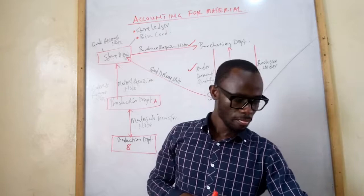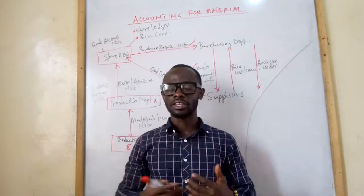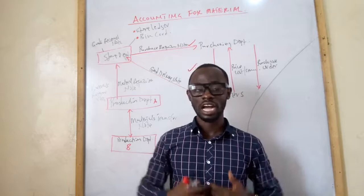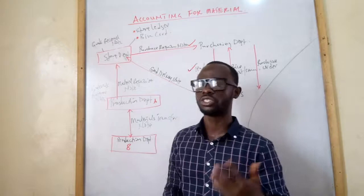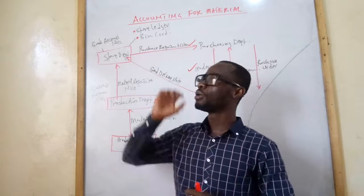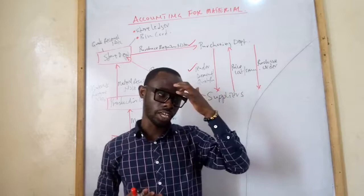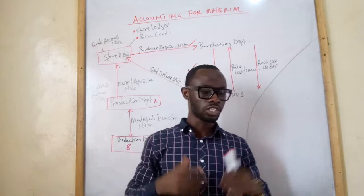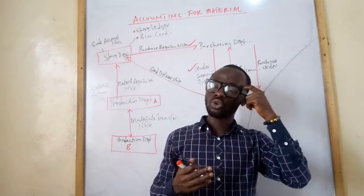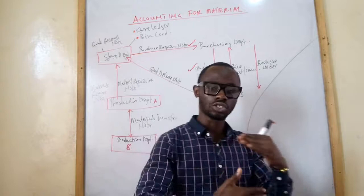Stock taking is simply the physical counting of inventories to determine how many are left. For instance, in a provision shop, at the end of every week you check what was bought, how many were sold, and how much to reorder. Stock taking refers to the physical verification of stocks in store and checking the results against the books. There are two ways stock taking can take place: continuous stock taking and periodic stock taking.